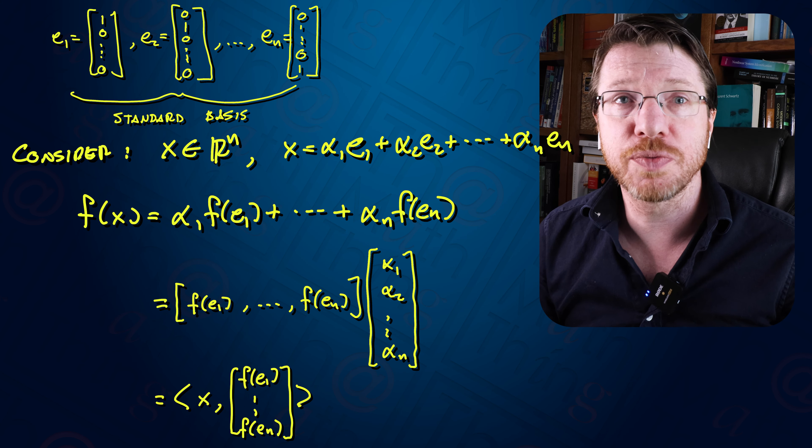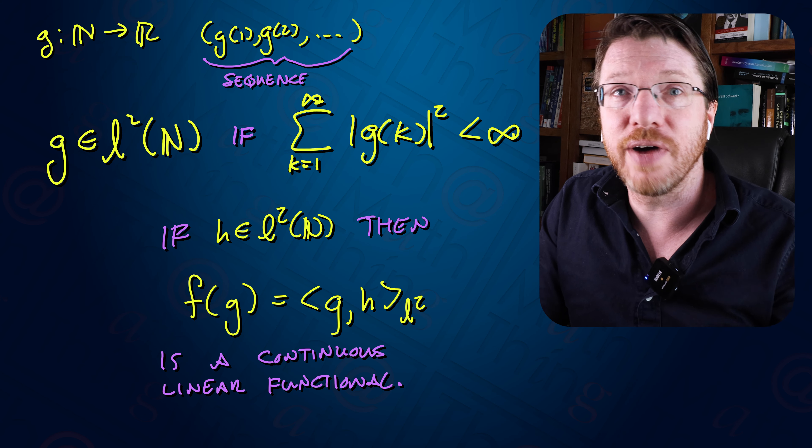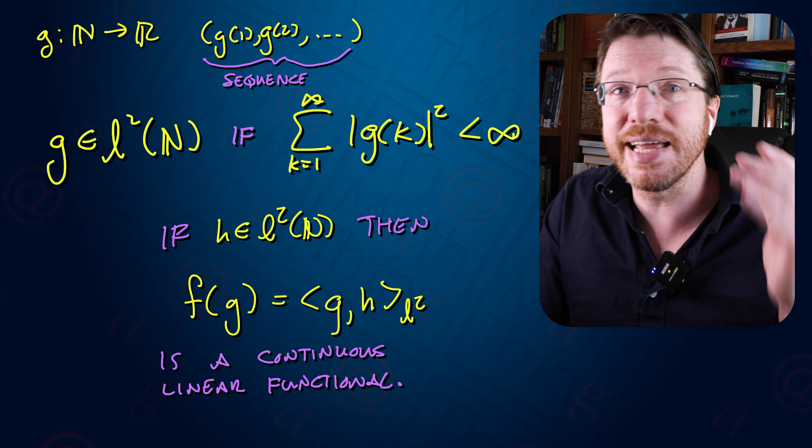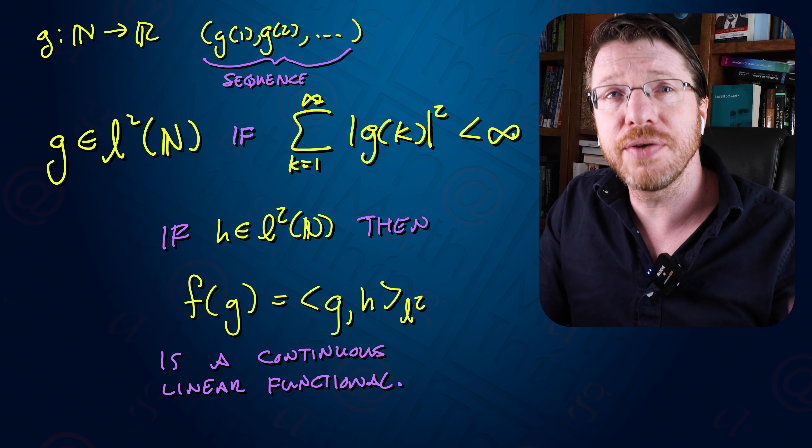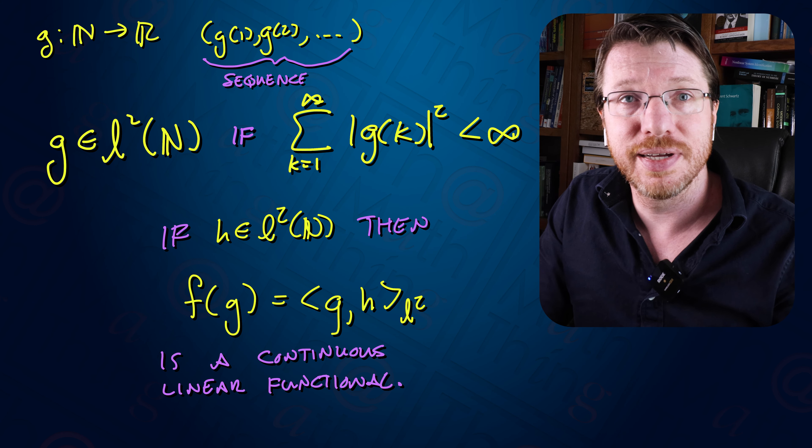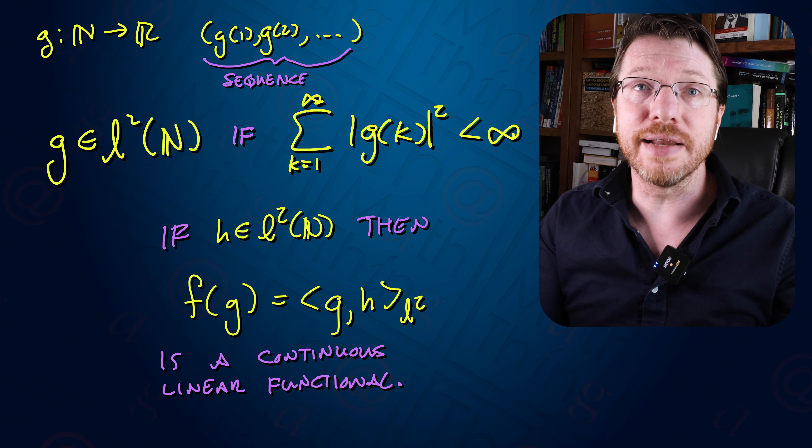Looking at our first infinite-dimensional Hilbert space — the space of square-summable sequences, which is what Hilbert thought of when he first started working on Hilbert spaces — we can quickly verify using the Cauchy-Schwarz inequality that each element of little L2 can yield a continuous functional through the inner product. That's a discrete space like R^n. But if we look at a continuum and consider L2 of an interval, we see a similar thing, again thanks to the Cauchy-Schwarz inequality. The central question we want to answer is: are these all of the continuous linear functionals?